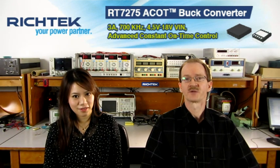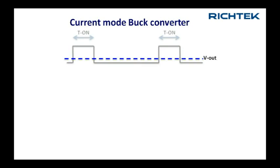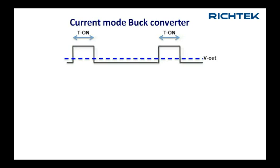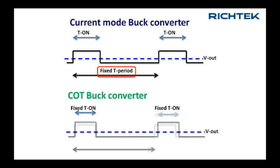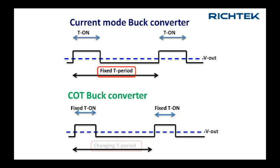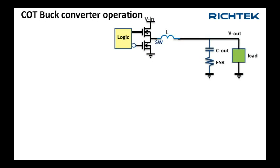Let me first explain some basics of the constant on-time topology. In current mode buck converters, to regulate the output voltage we control the on-time of the switching waveform to cope with input voltage and load changes and keep the frequency constant. Constant on-time buck converters control the off-time while keeping the on-time fixed, which means that the frequency is variable. The basic COT buck consists of a power stage with driving logic, an output capacitor with some ESR, and the load.